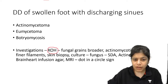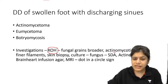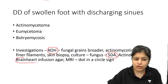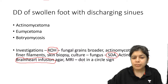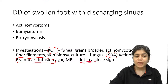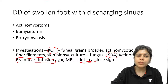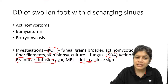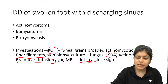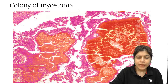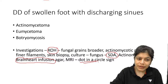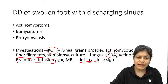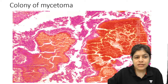For investigations: KOH mount — actinomycotic grains show finer filaments. Skin biopsy and culture for fungus on Sabouraud dextrose agar; for actinomyces on brain-heart infusion agar. MRI shows a typical 'dot-in-a-circle' sign. For treatment: actinomycetoma — use the Welsh regimen with amikacin plus co-trimoxazole, possibly adding amoxicillin-clavulanic acid. Eumycetoma — give an antifungal like itraconazole. Botryomycosis — give an antistaphylococcal medication.